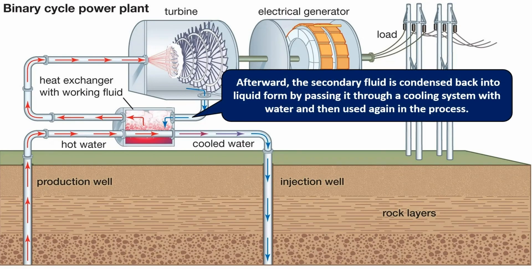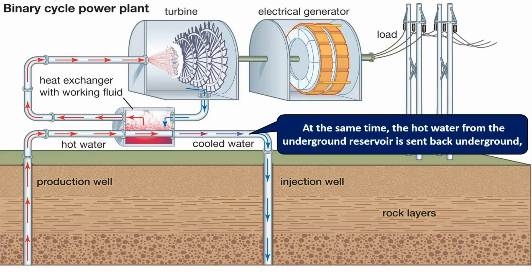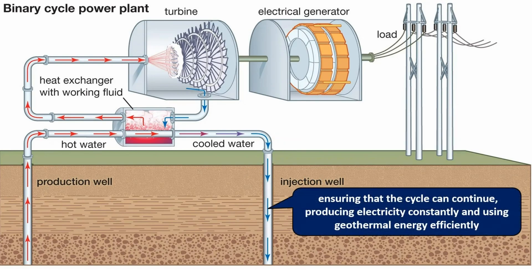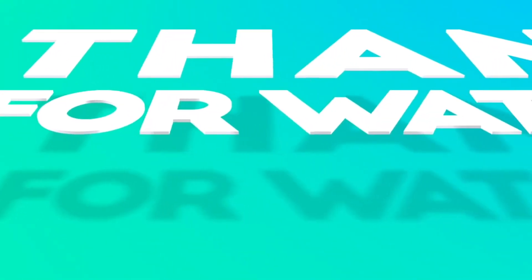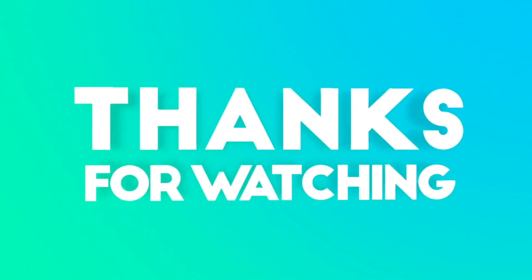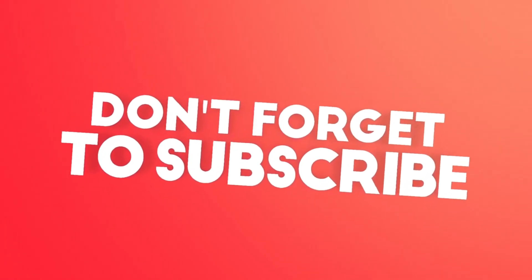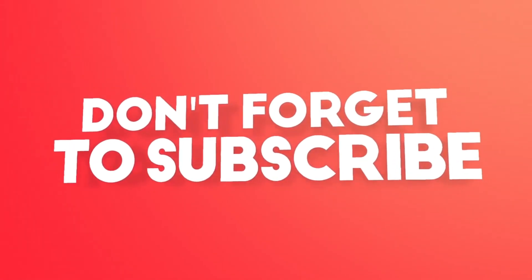Afterwards, the secondary fluid is condensed back into liquid form by passing it through a cooling system with water, and then used again in the process. At the same time, the hot water from the underground reservoir is sent back underground, ensuring that the cycle can continue producing electricity constantly and using geothermal energy efficiently.